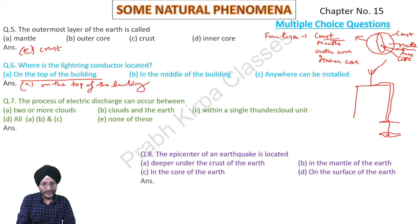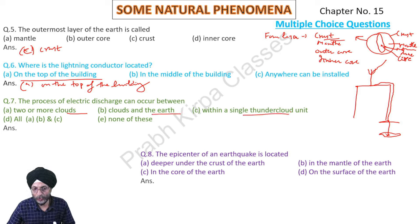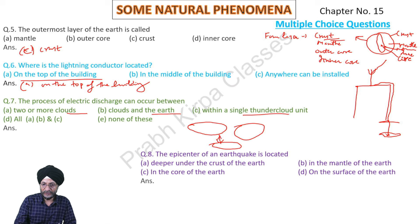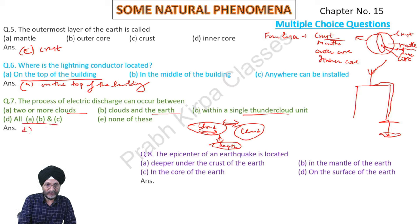The process of electric discharge can occur between two or more clouds, between clouds and the earth, or within a single thunder cloud. Lightning can take place within a single cloud, between two different clouds, or between the cloud and the earth. So our answer is A, B, and C.